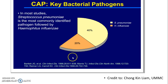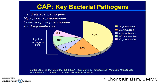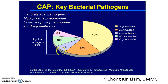These percentages can vary from hospital to hospital and region to region, but these are the two most common causes of community-acquired pneumonia. In addition, we also have atypical pathogens such as Chlamydia pneumoniae, Mycoplasma pneumoniae, and Legionella species, which together contribute about 20% of community-acquired pneumonia cases.